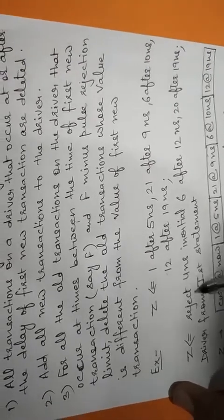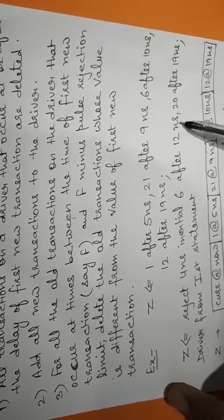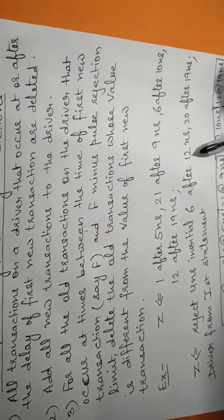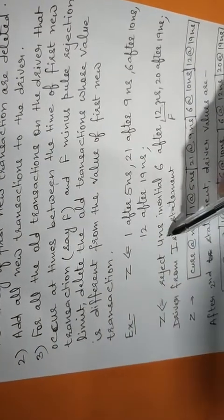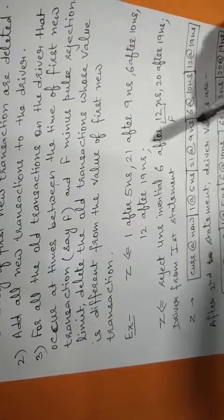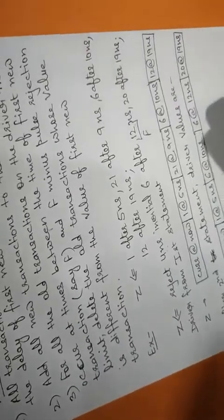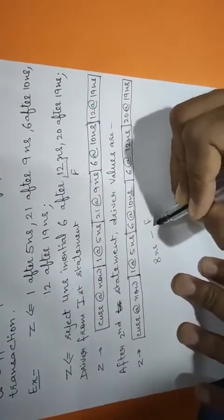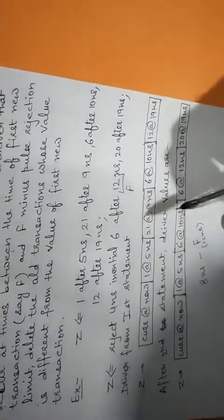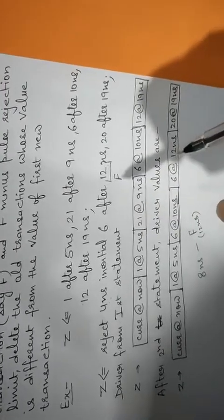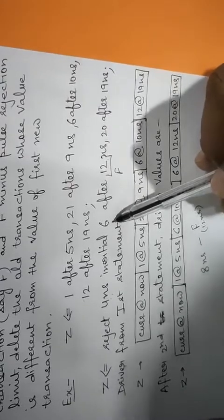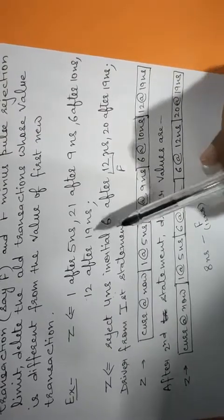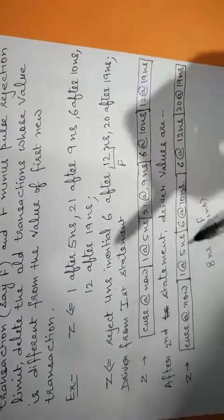Now after this, the inertial delay statement is coming: reject 4 nanoseconds, inertial 6 after 20 nanoseconds. How will it be stored in the signal driver? We will take the time period as F, and the pulse rejection limit is subtracted from F. We take the range from F minus pulse rejection limit — which is 8 nanoseconds — to F, which is 12 nanoseconds. If any time period falls between 8 and 12, such as 9, 10, 11, or 12, we check the value as well. If its value is the same as that of the new transaction value, those transactions will be retained; otherwise those transactions will be deleted, and the new transaction will be added to the signal driver.